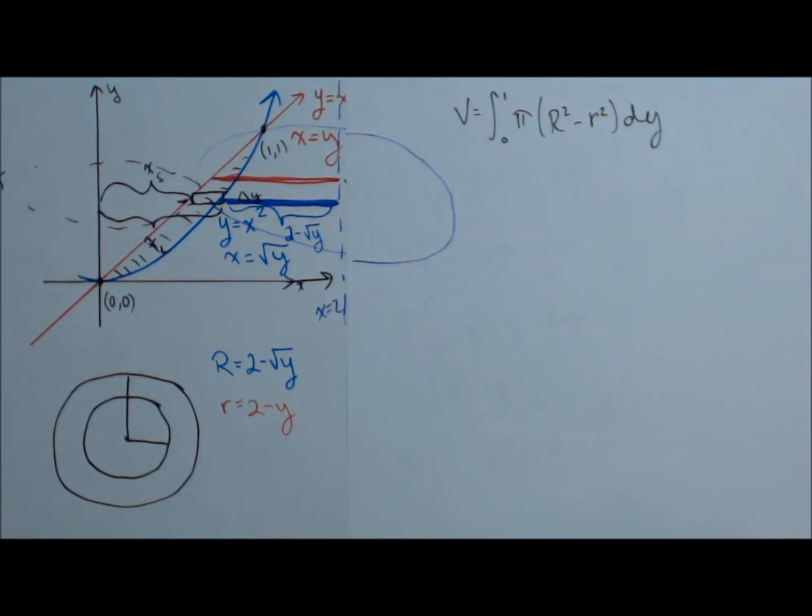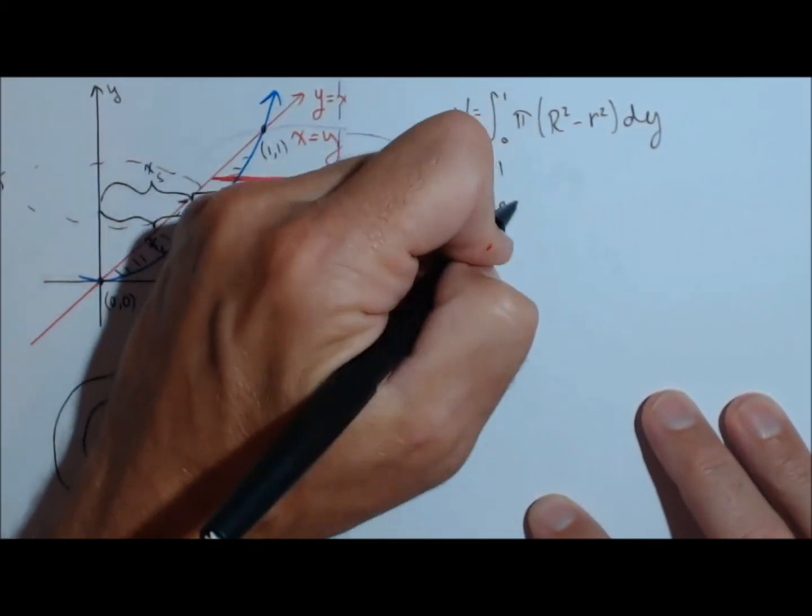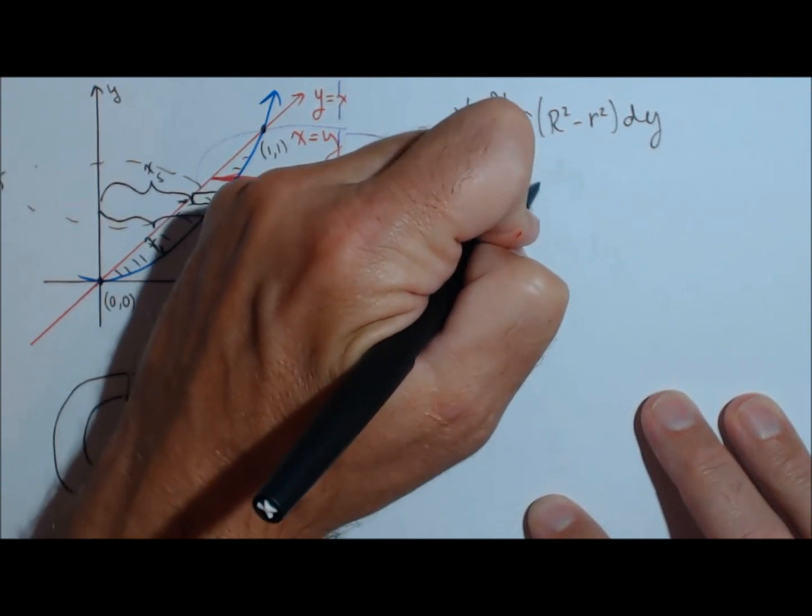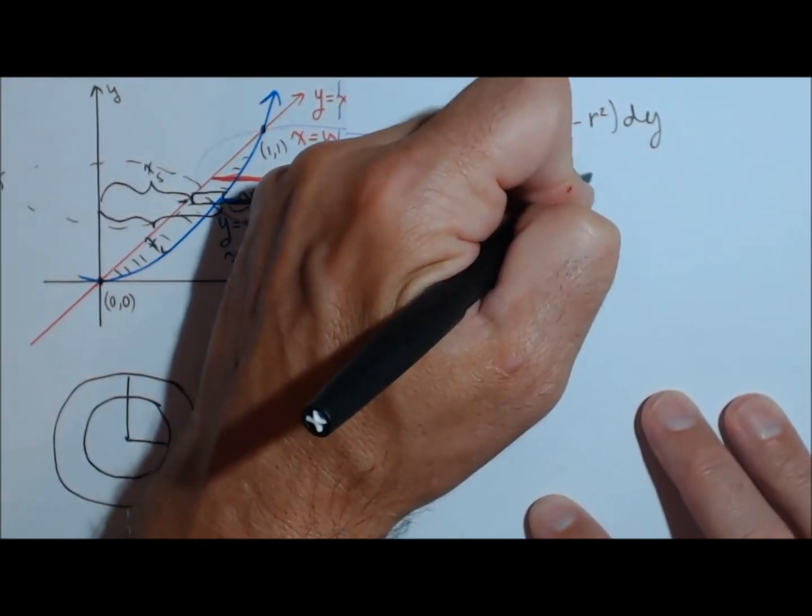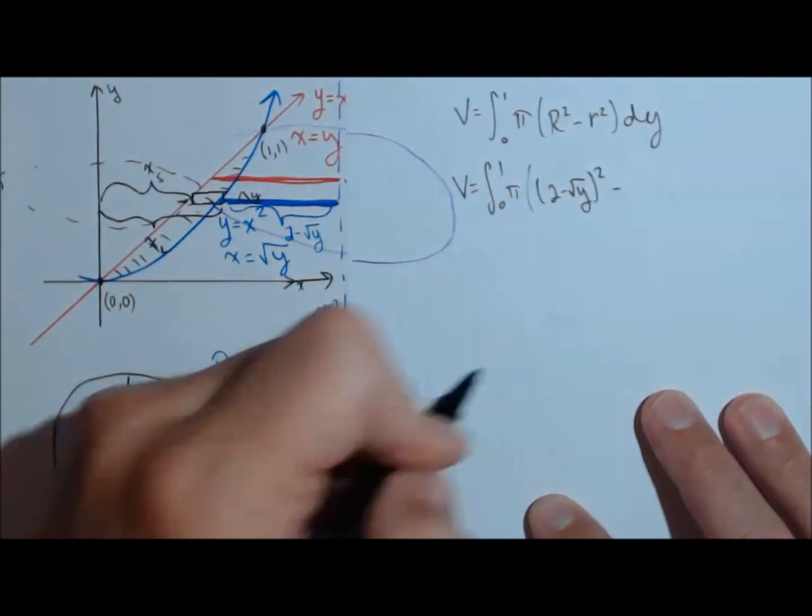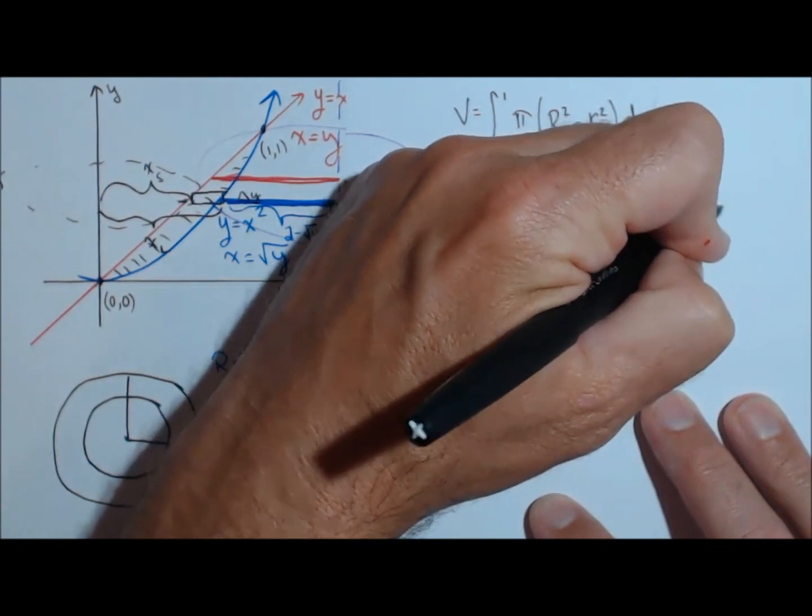So let's go ahead and plug those in and we'll see what we get. So v equals zero to one pi times. First, we're going to have two minus square root of y squared minus two minus y squared dy.